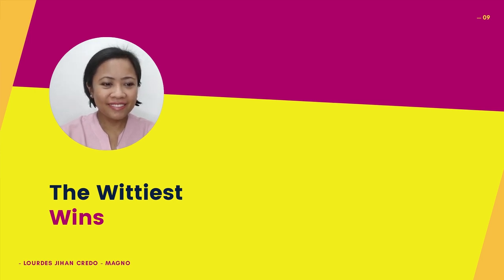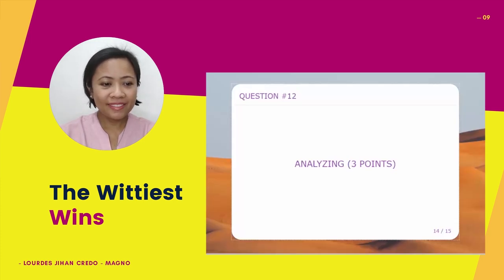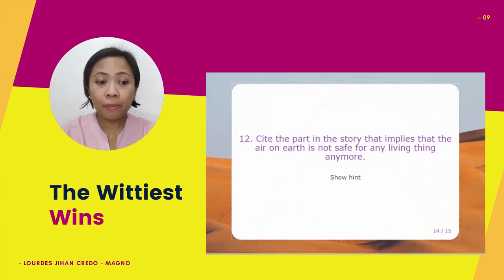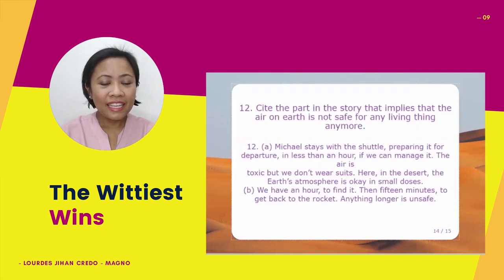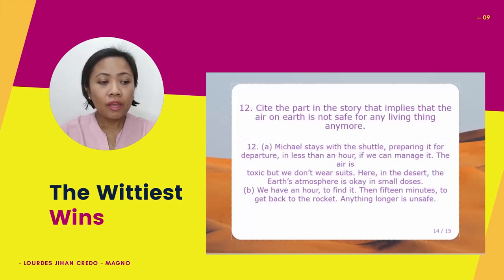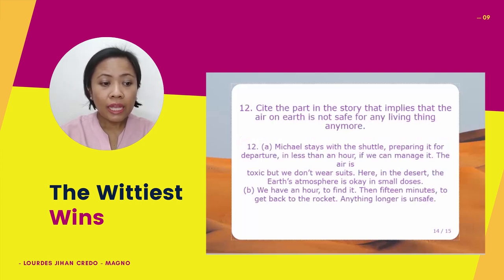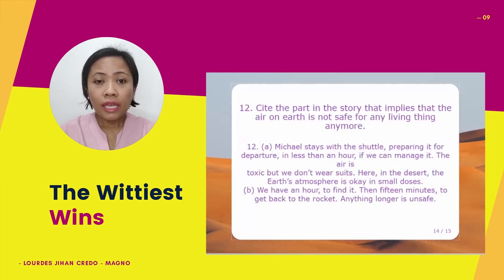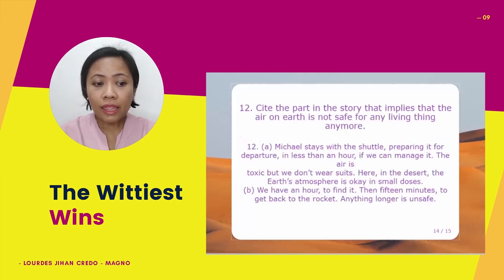Group 1, analyzing for 3 points. Cite the part in the story that implies that the air on earth is not safe for any living thing anymore. Here are the lines that prove it: 'Michael stays with the shuttle, preparing it for departure in less than an hour if we can manage it. The air is toxic, but we don't wear suits. Here in the desert, the earth's atmosphere is okay in small doses.' Those lines show that the air on earth is already toxic, but the air in the desert is tolerable, so the characters could stay without wearing suits.